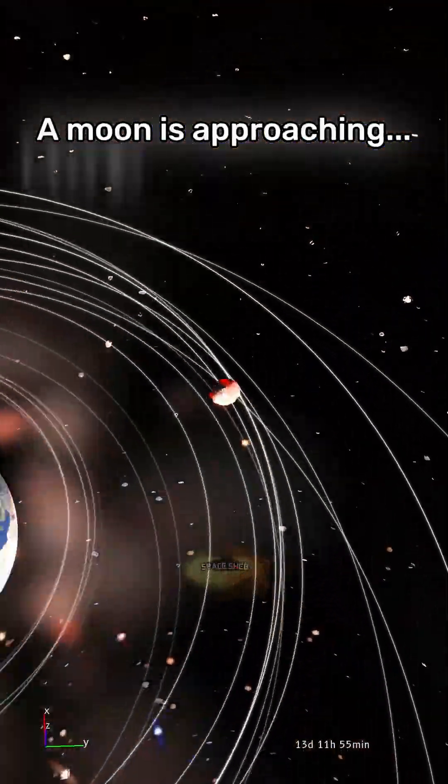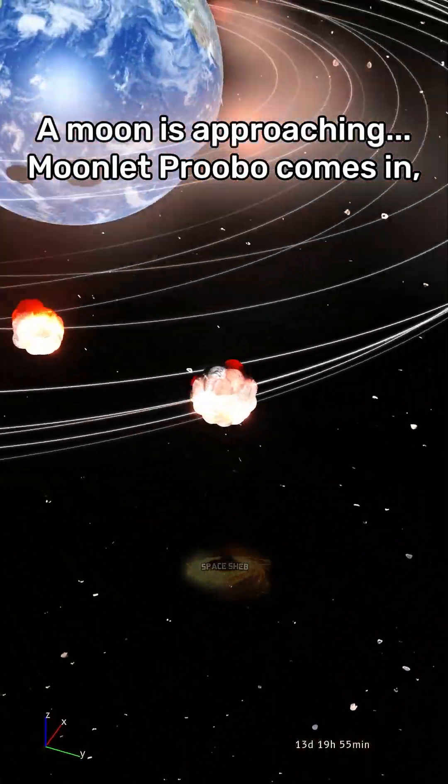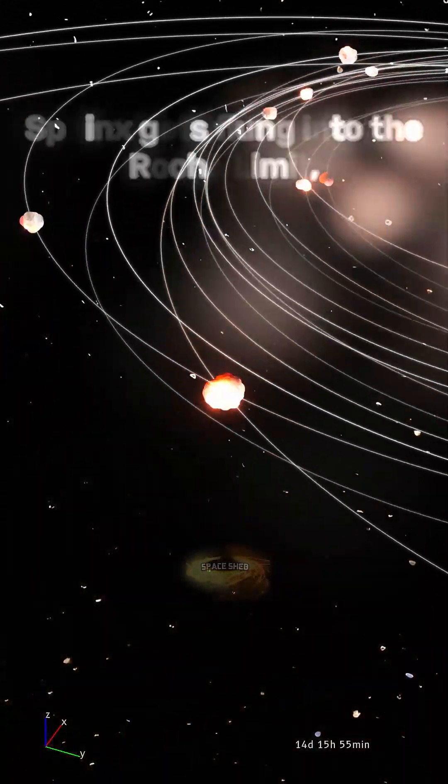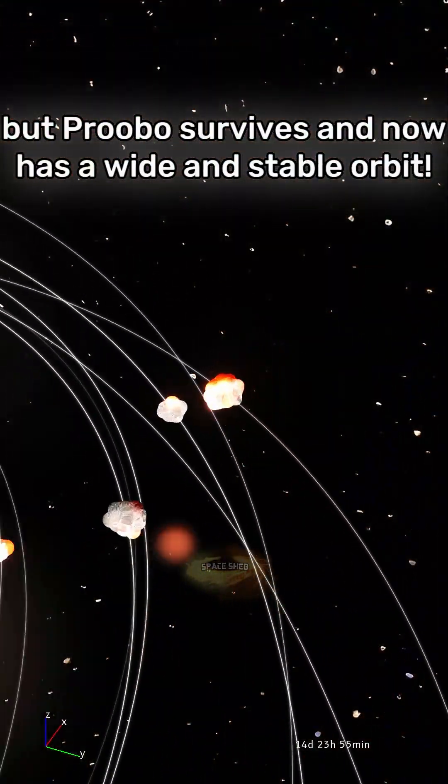A moonlet's approaching. Moonlet Approval comes in and collides with Sphinx, spinning around. Sphinx gets flung to the Roche limit. But Approval survives and now has a wide and stable orbit.